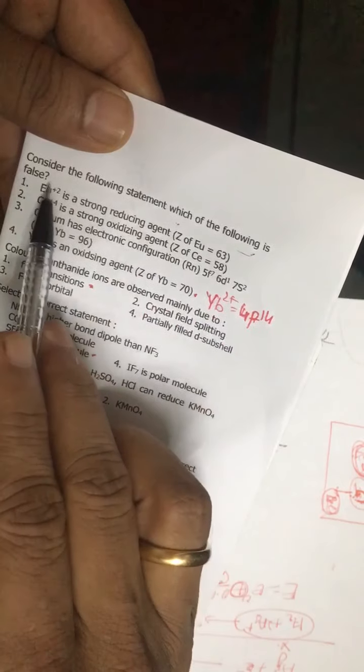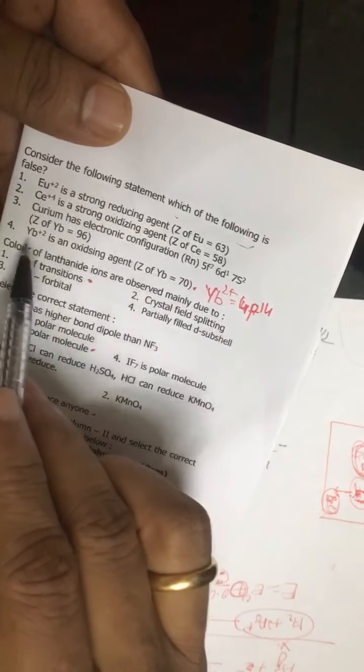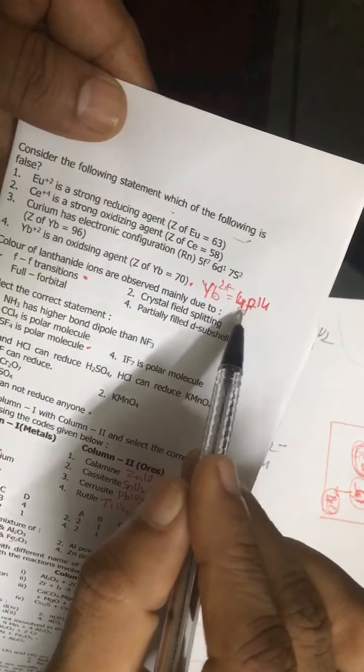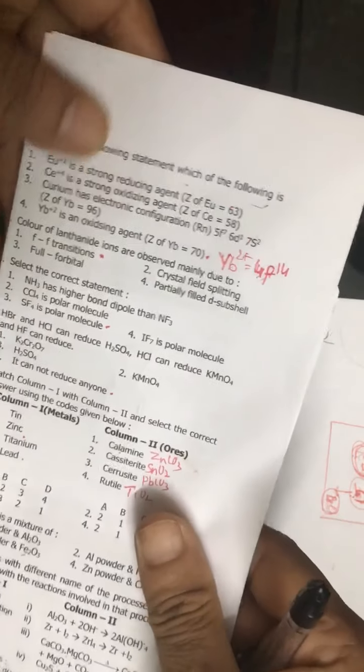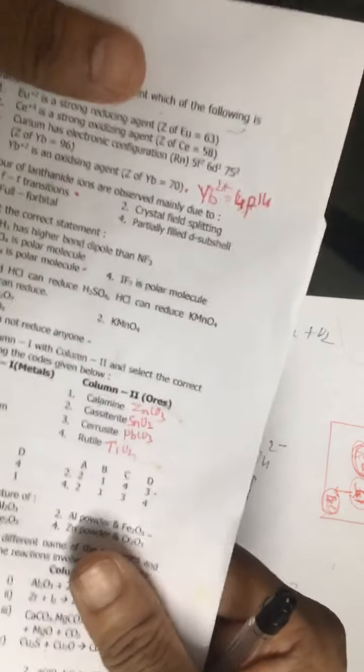Question number 81: which is false? Correct answer is fourth option. Actually, Yb2+ is an oxidizing agent - Yb2+ is 4f14, so it is very difficult to accept electron by Yb2+ because it is a stable configuration.